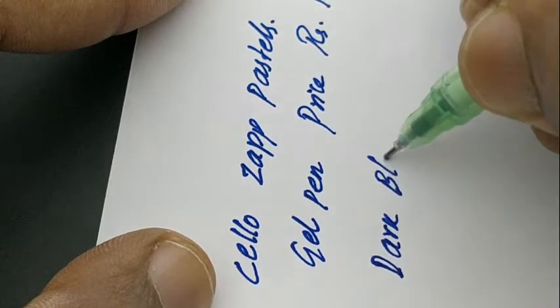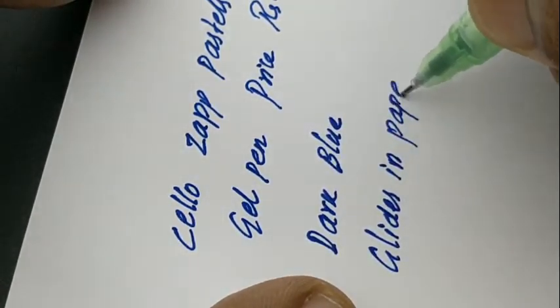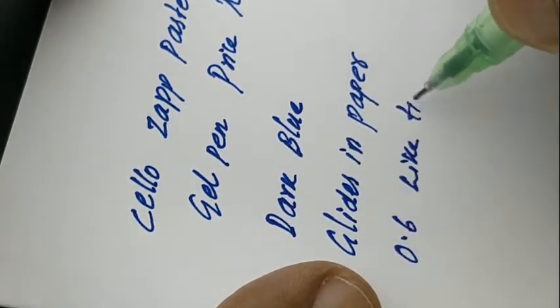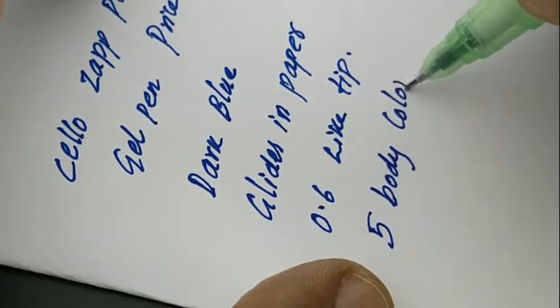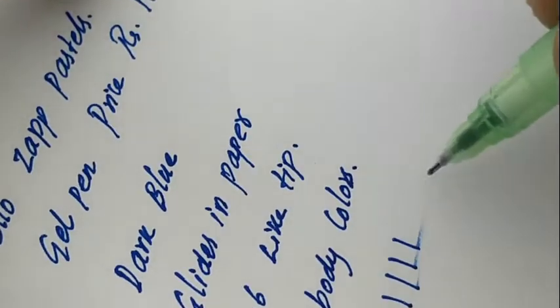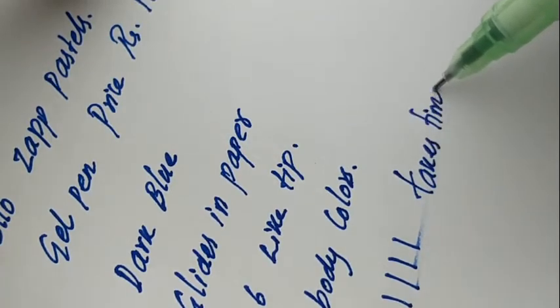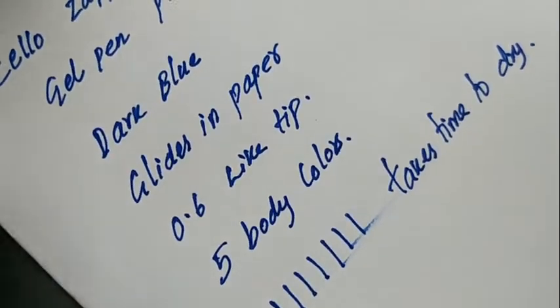It is not very slim and not very bold either, medium tip 0.6 like tip. Dark ink, enough, and it makes some back impression to the page. A standard 10 rupees gel pen with a different body design theme from Cello.